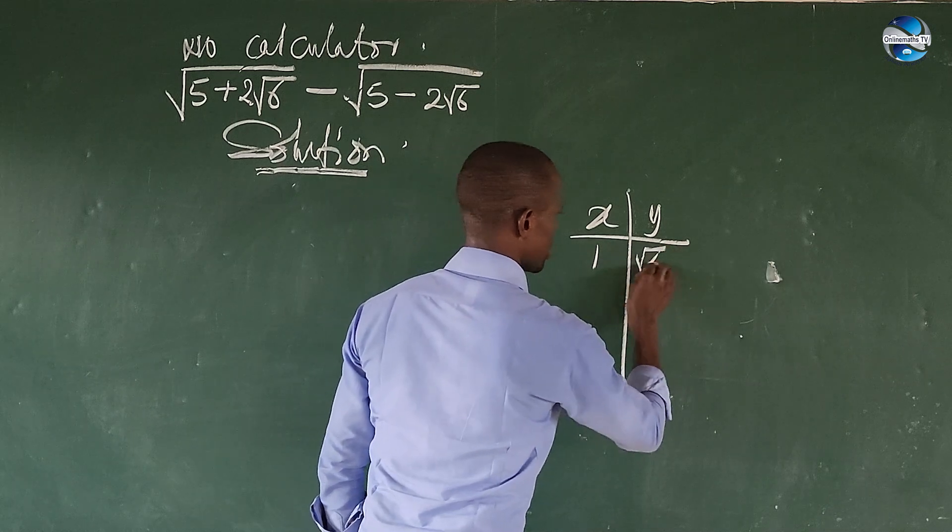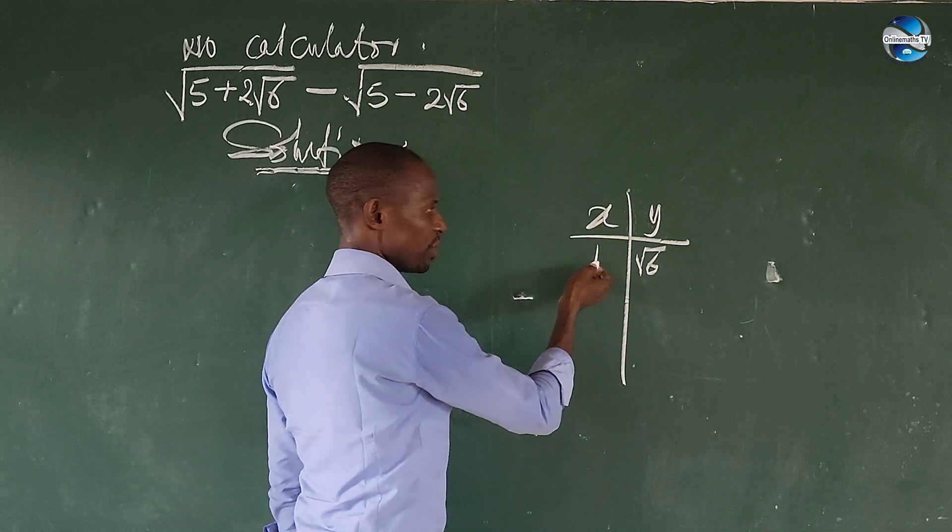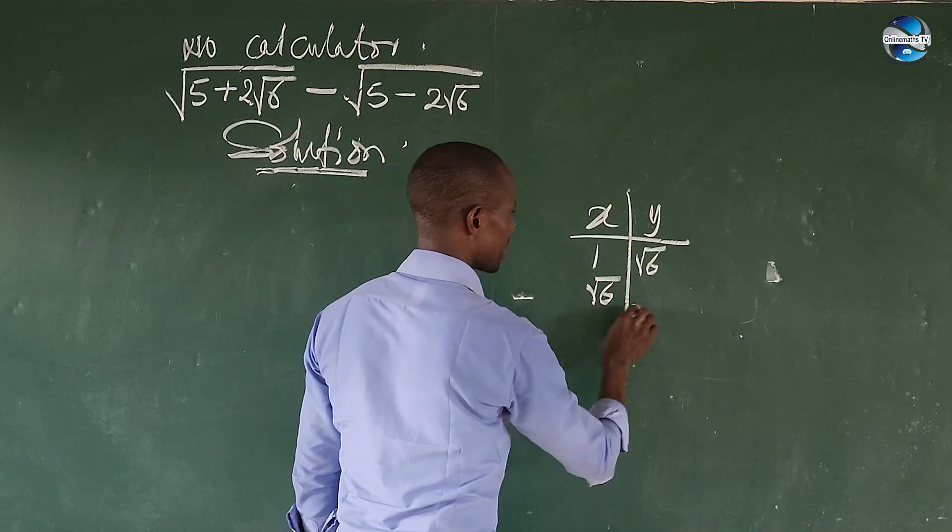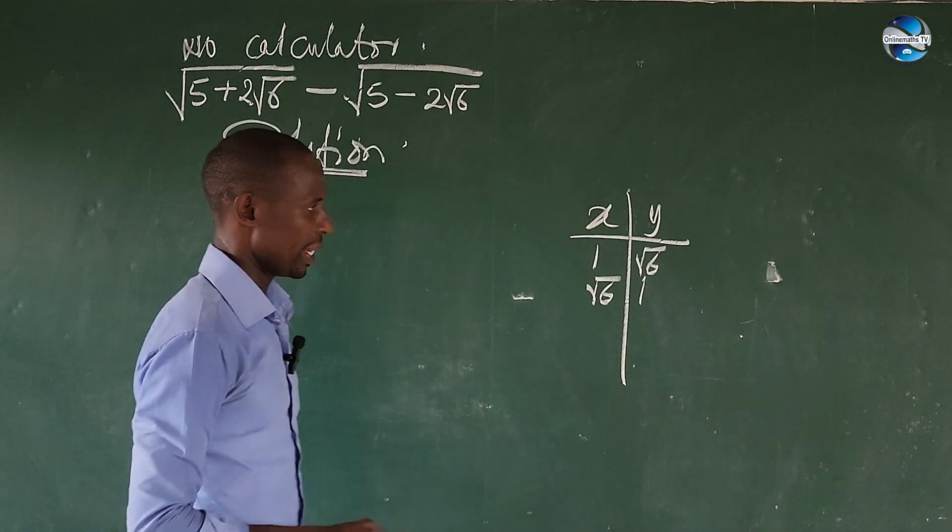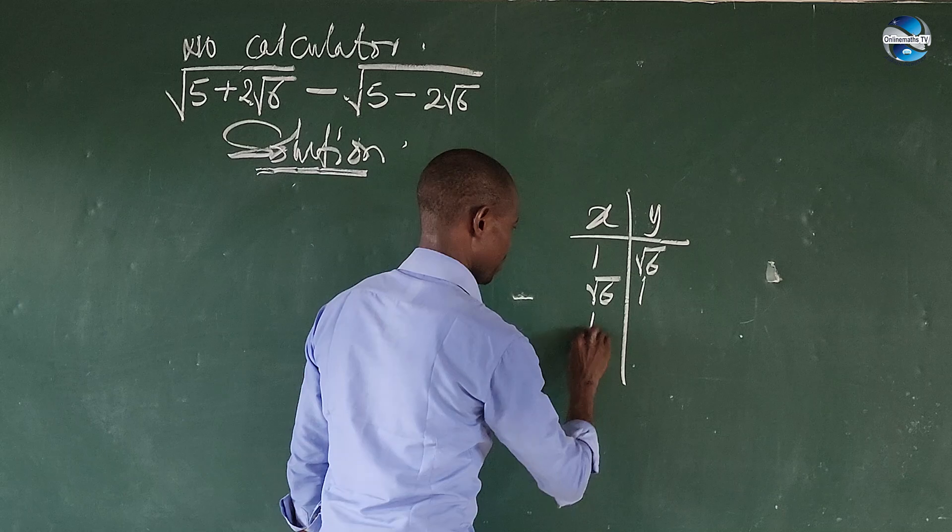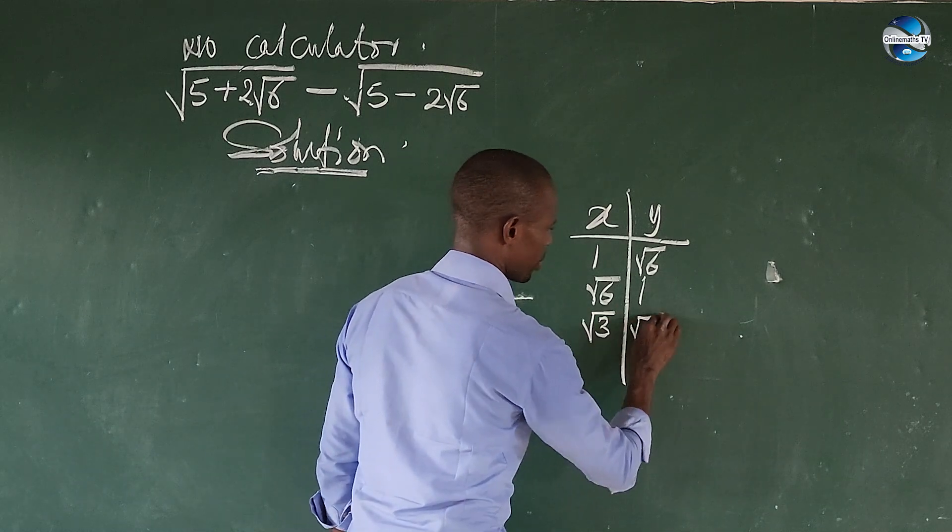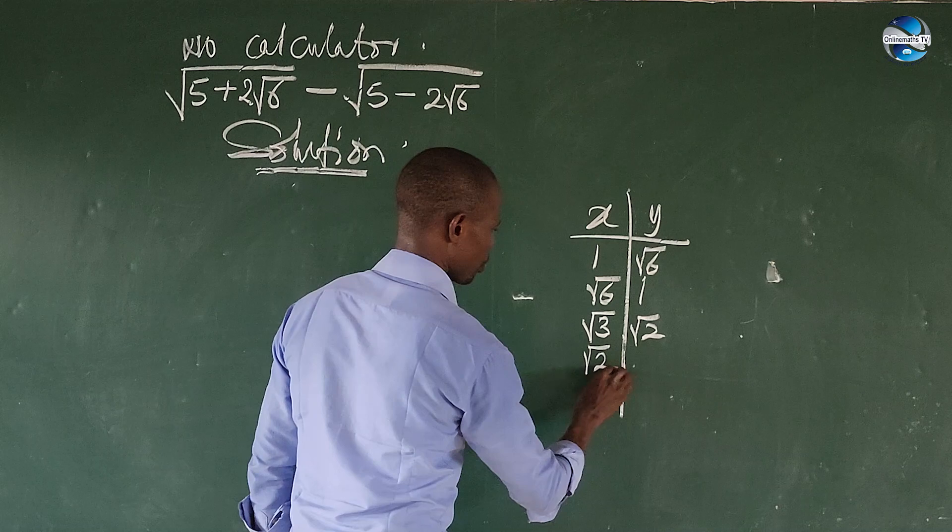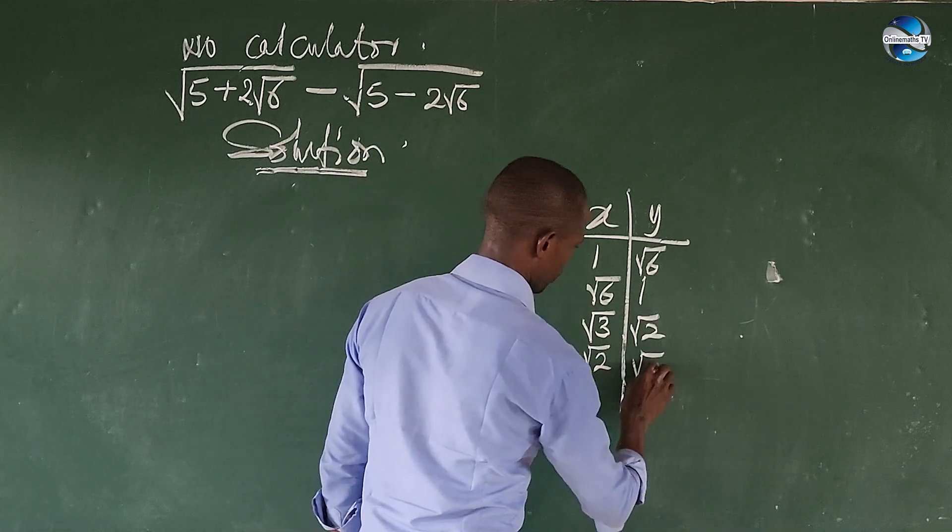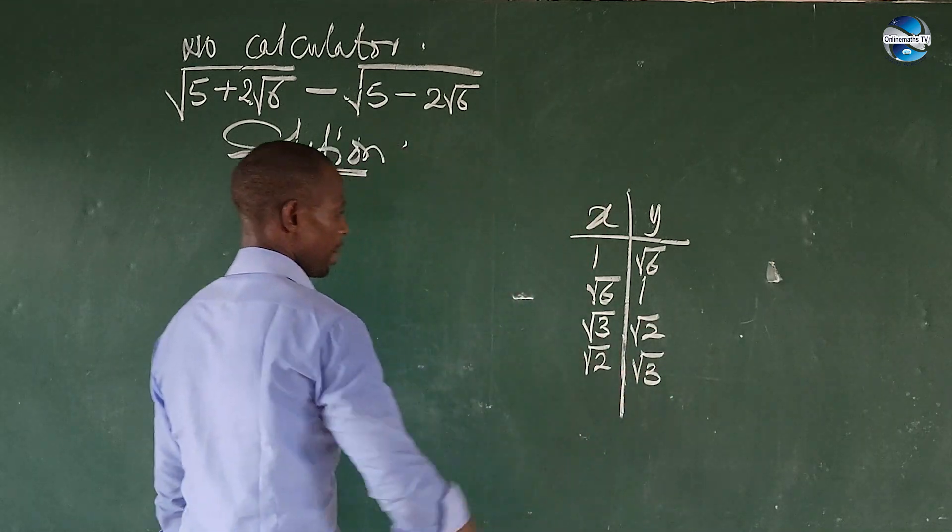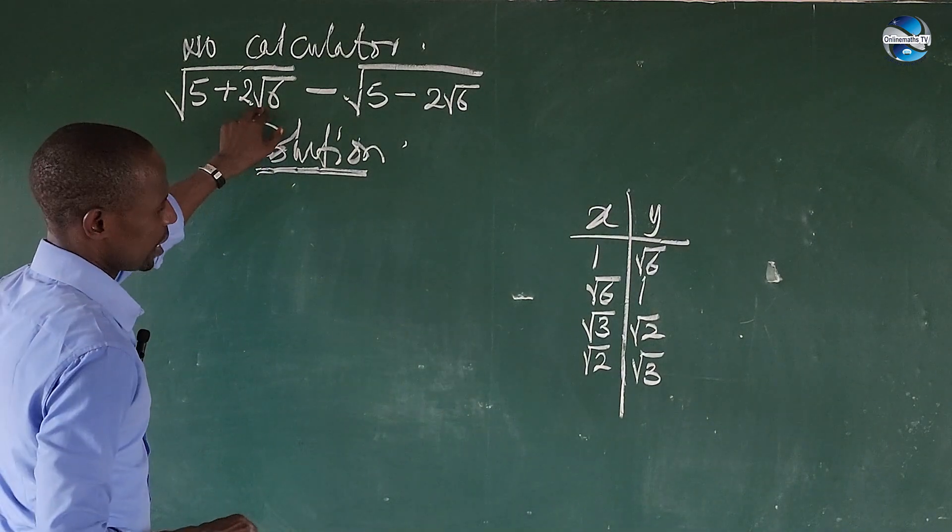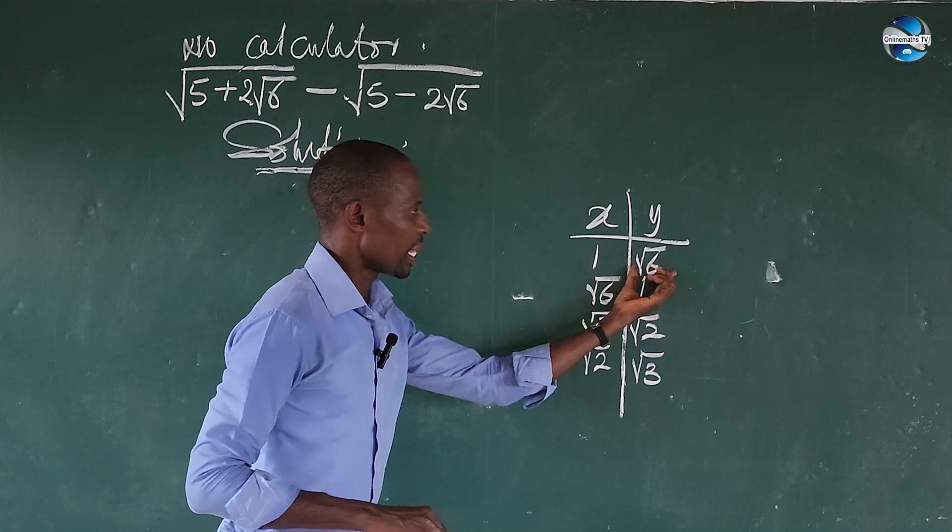At the same time we can have root 6 then 1. Again we can split this to a kind of root 3 then root 2. Then again we can take x to be root 2 while this gives us root 3. So either of these will give us this product here. Now we look for among these two that if we take the square of it, their sum will give us something of this kind.